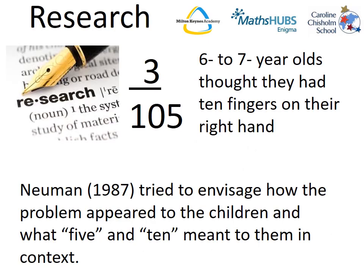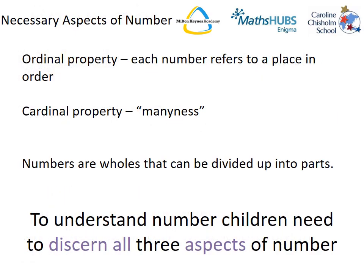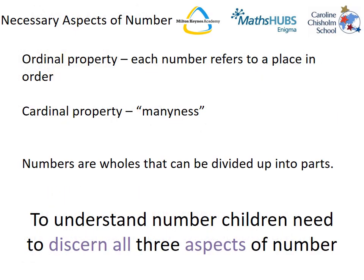Puzzled by this, she looked further into the necessary aspects of number, and it became clear that the three children had only mastered the ordinal property, and so referred to their tenth finger as having ten fingers on their right hand.